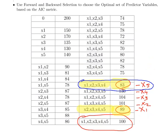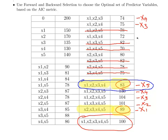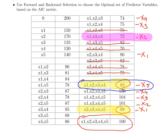At the next step we see if we can remove something else. X5 is out of the model for good, so any model with X5 is no longer considered. The options are to subtract X4, X3, X2, or X1. In this case the best option is the model with X1, X3, X4 — that is, taking out X2 — which gets the AIC down to 72. So we remove X2 and X5. Our current model is X1, X3, X4.